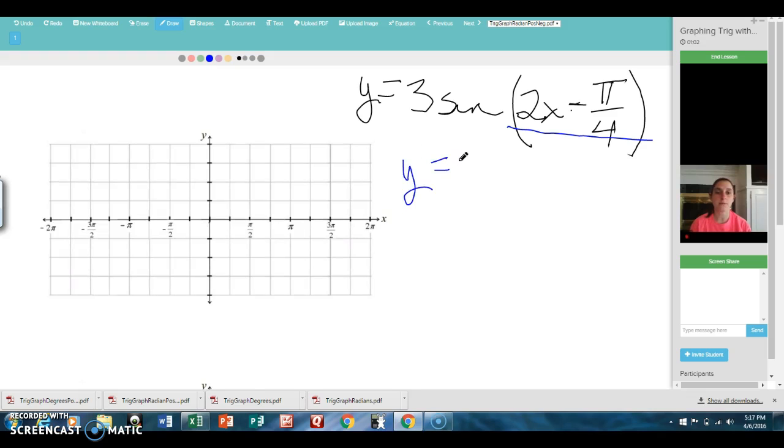So we're going to begin by taking the 2 out and putting it on the outside of the parentheses. That'll leave me with x minus pi over 8.